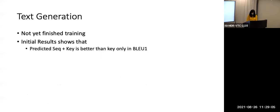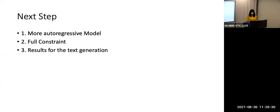For the text generation part, it is still training, but some initial results show that using the predicted sequence plus the key is better than using the key only. However it has not yet converged, so I did not include results here, but there are some initial positive findings that I can complete in the future. The immediate next steps are: bringing more autoregressive models such as BART to see if it can show similar or better results, applying the full constraint the same way APSI does, and completing the text generation results comparing key plus predicted sequences and key plus ground truth sequences versus key only.